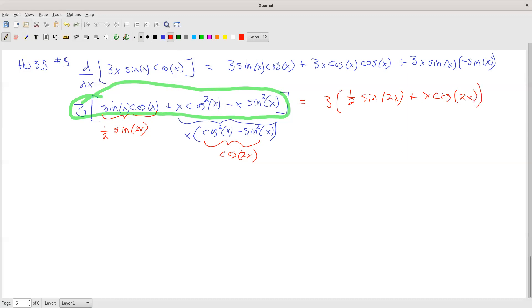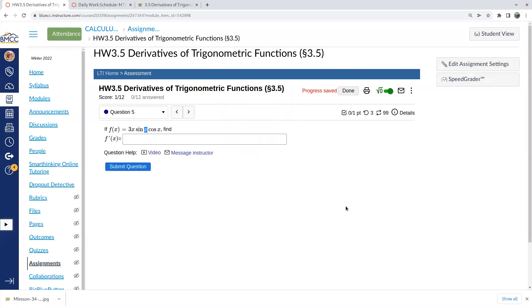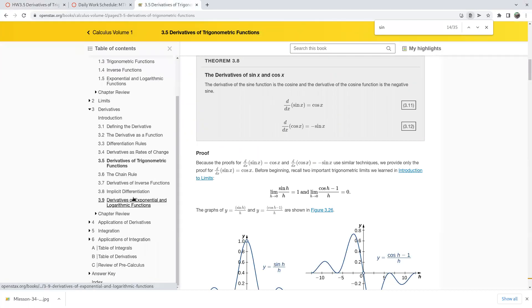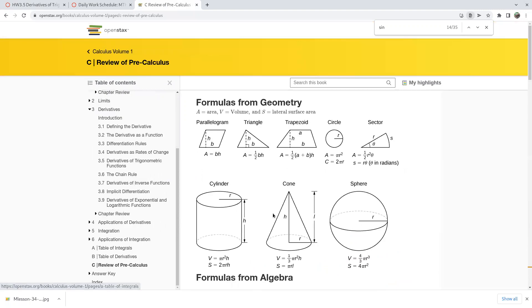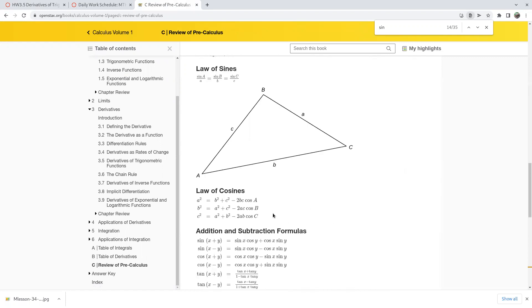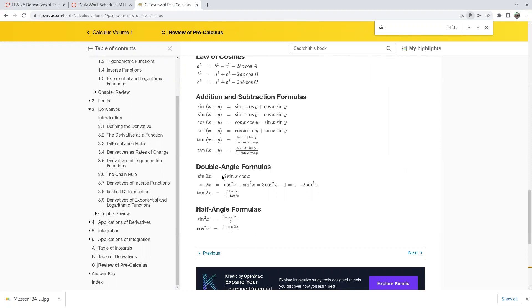Alright, so we need the trig identity sheet. Our book has one in the appendix. So probably review of pre-calculus, trig formulas. Okay, double angle. So the sine of 2x is twice sine cosine. I was missing that 2 right here, so I put it on the other side as one half sine of 2x. And the cosine of 2x is cosine squared of x minus sine squared of x. That one is straightforward. So yeah, double angles did apply there.